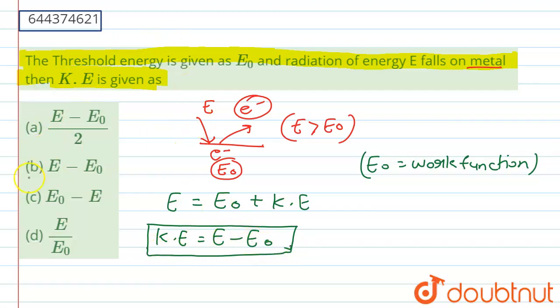So if we look at the options here, option B is the correct one, that is E minus E₀, and I hope you get the concept.